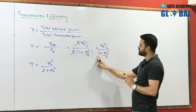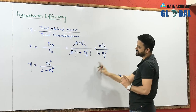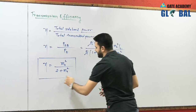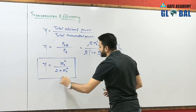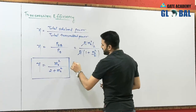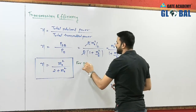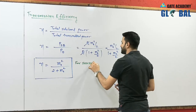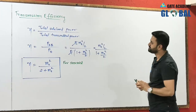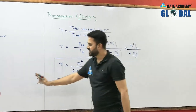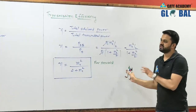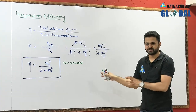To express efficiency as a percentage, multiply by 100. This formula for η = MA² / (2 + MA²) and the total power PT = PC(1 + MA²/2) are both valid only for a single-tone sinusoidal modulating signal.